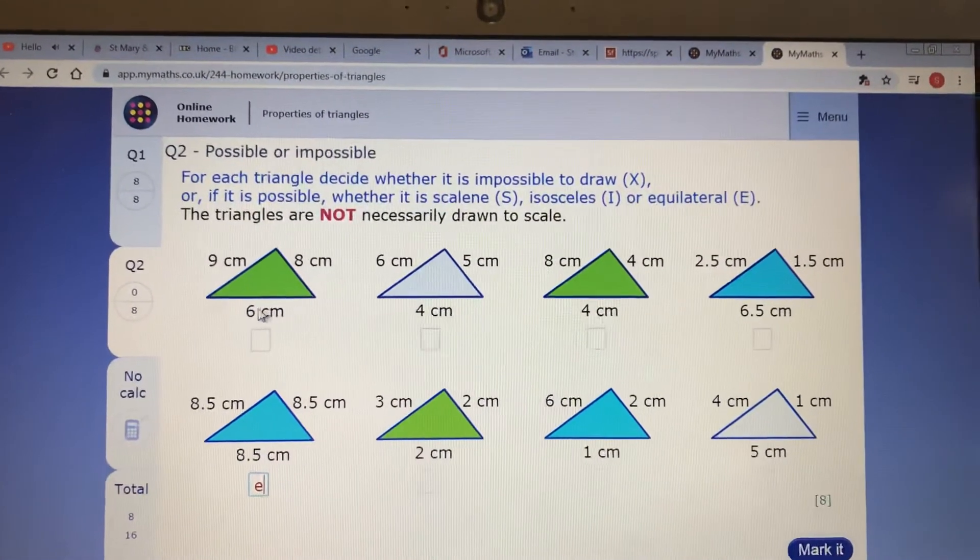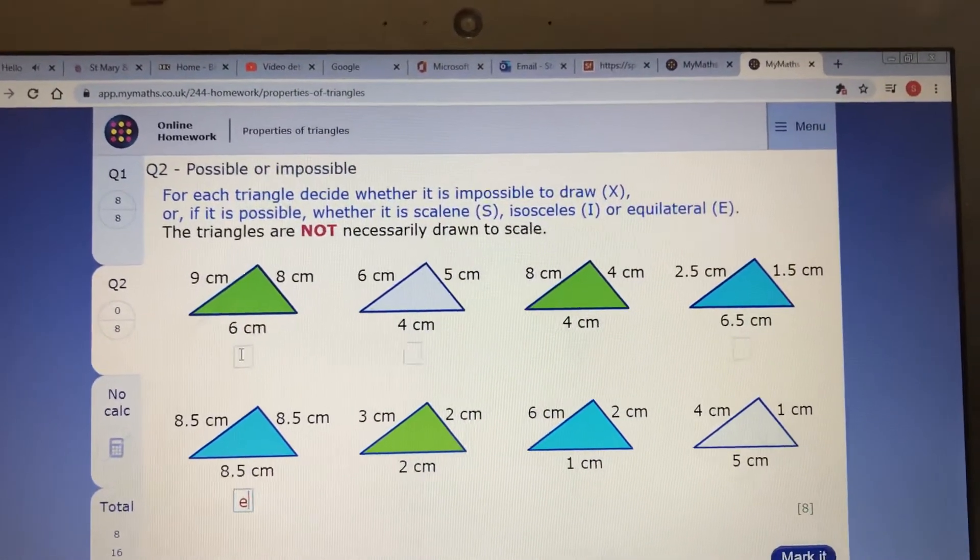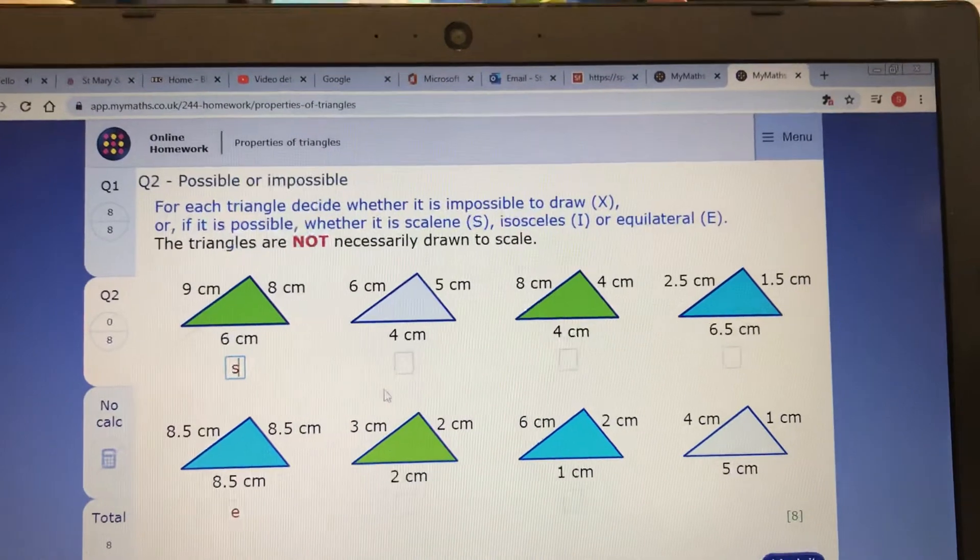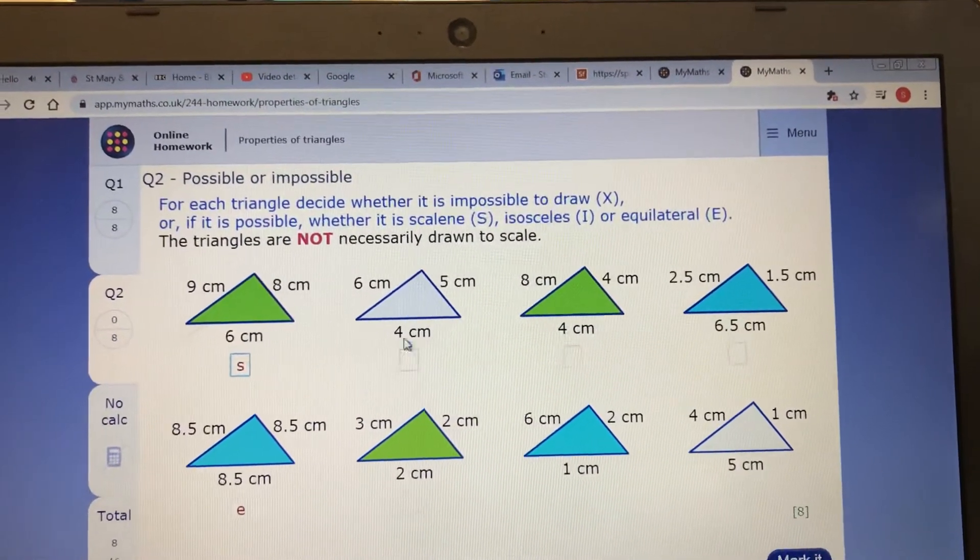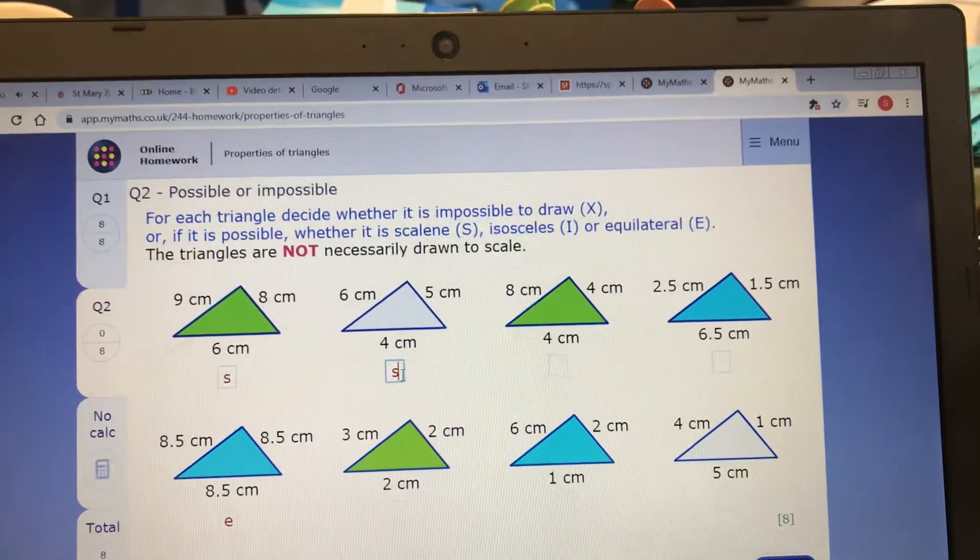The two smaller angles, do they add up to? Six and eight are the two smallest ones. Yeah, they add up to more than nine. So they're all different, so I'm going to call that a scalene. Let's have a look at the two smallest ones. Four and five, do they add up to more than six? Yeah. So that's also all three different, so that's a scalene.